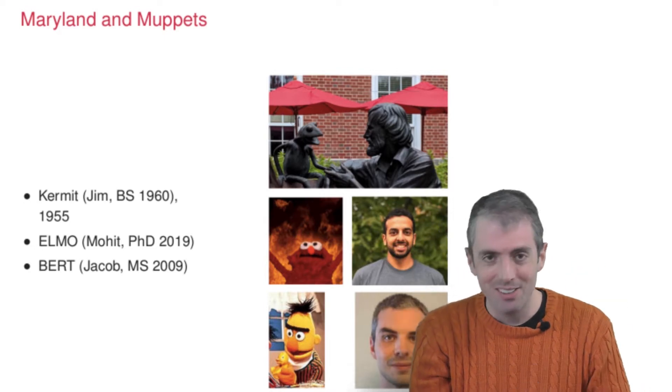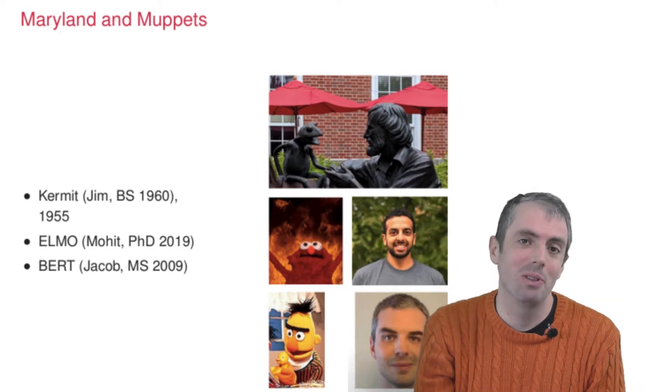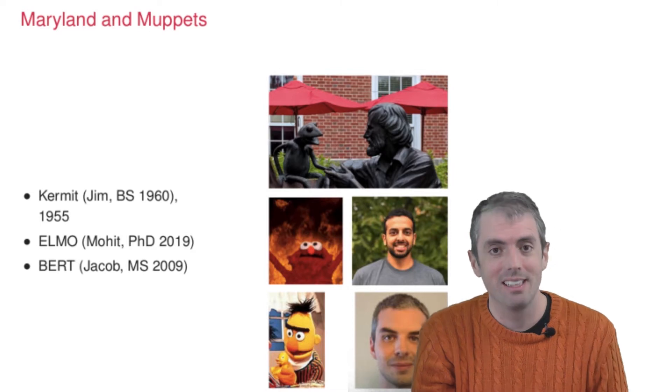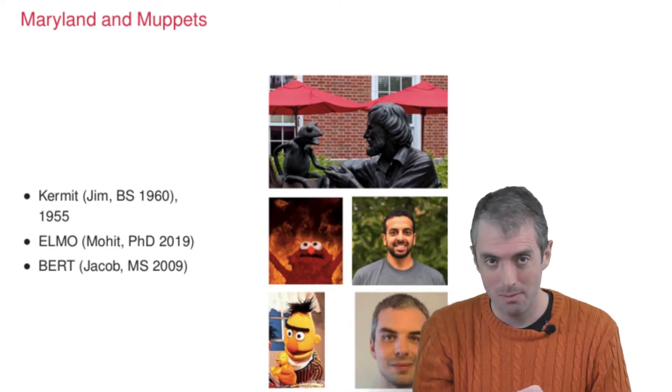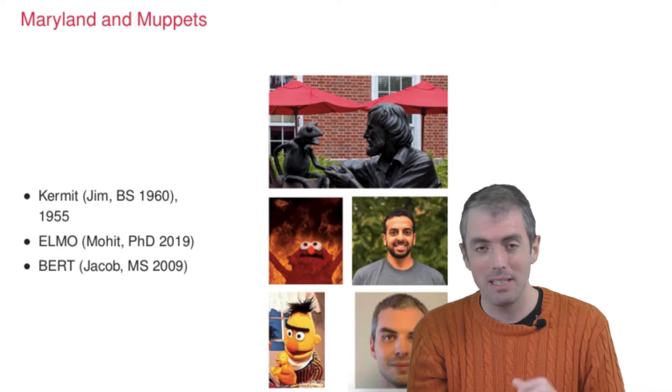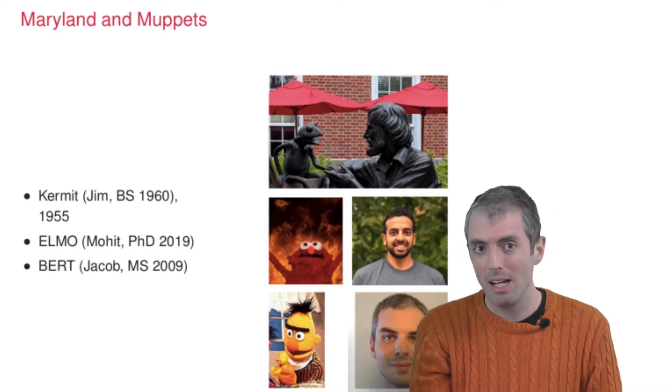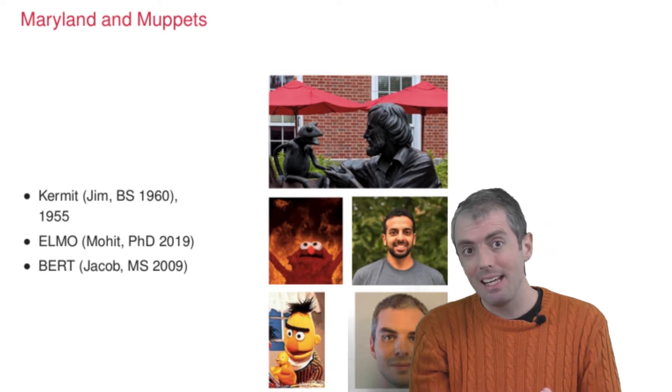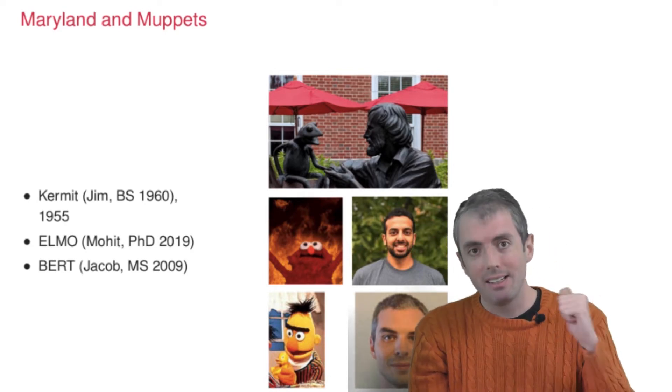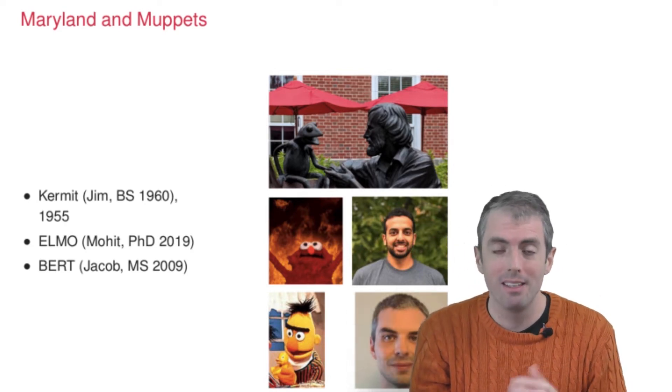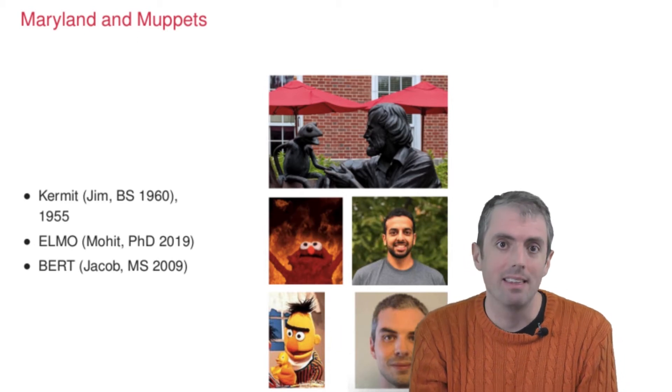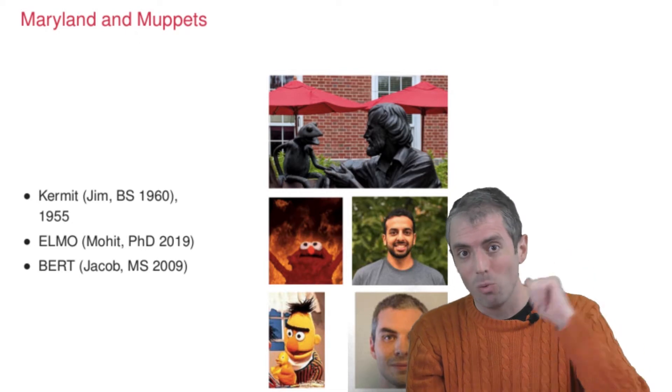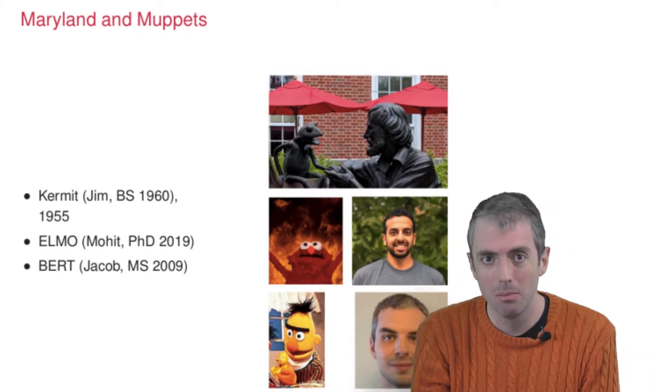Neural language models also have a connection to the University of Maryland. One of the first neural language models, and the one that began the Muppet naming craze, was ELMO. One of the authors on that ELMO paper was Mohit Iyer, my former student, who then became a postdoc at the Allen Institute for Artificial Intelligence, where he worked on a team that developed ELMO.